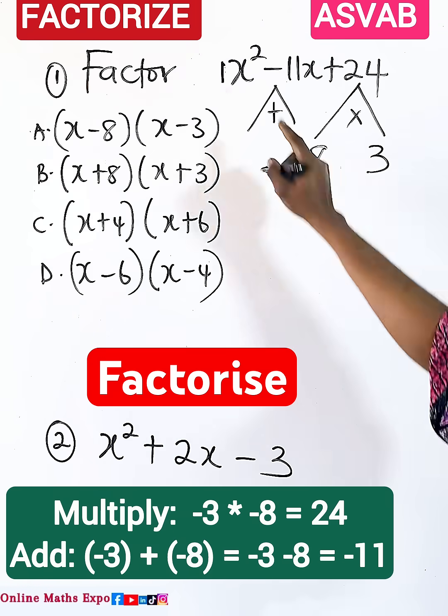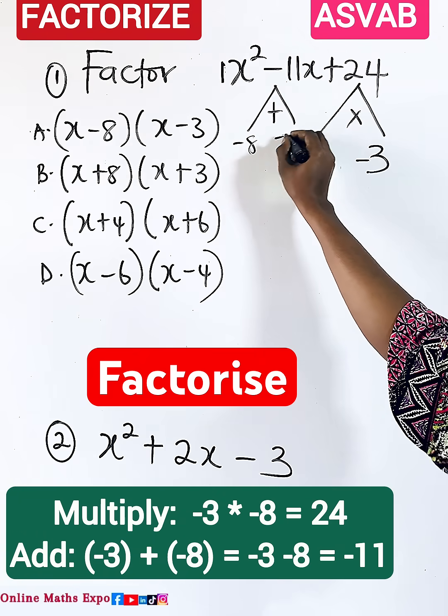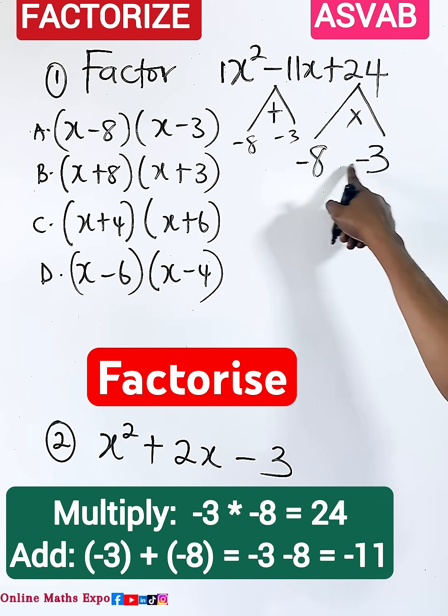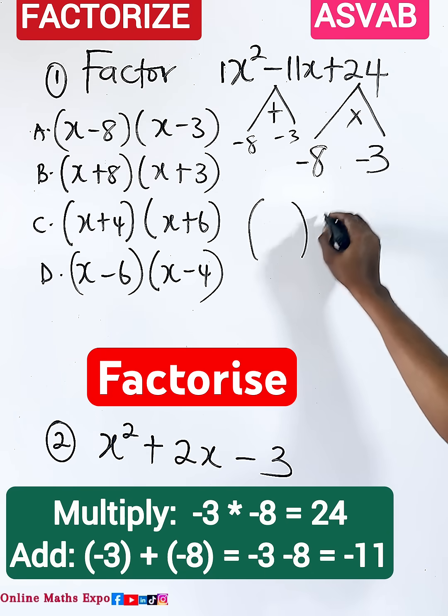Now this is negative, so we can have negative eight and negative three are the two numbers that when you add it gives you negative 11 and when you multiply it gives you positive 24.